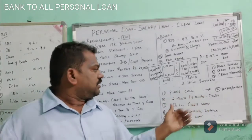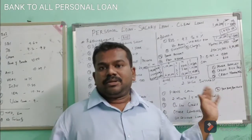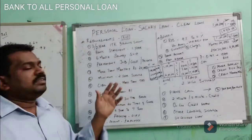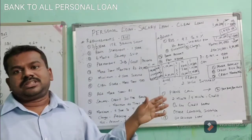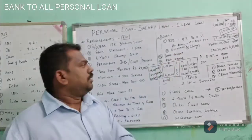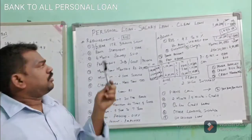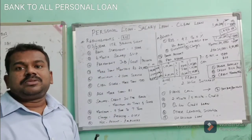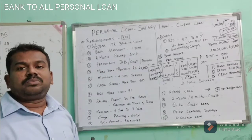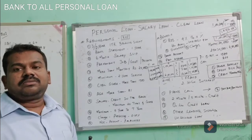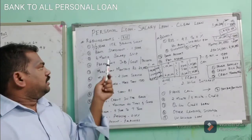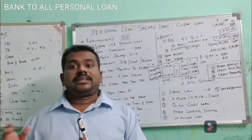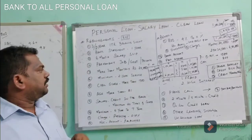Such offers must be fraud or carry a higher rate of interest. Here are the few documents you need to get the best rate of interest. First, you need to submit two to three years of IT returns or balance sheet. Then bank statement — to confirm you are receiving your salary monthly. Then six months' salary slips showing your gross salary, net salary, and other deductions.